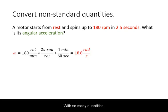With so many quantities, it is an important check that all of them are in standard form. In this example, RPM, which stands for rotations per minute, had to be converted to radians per second.